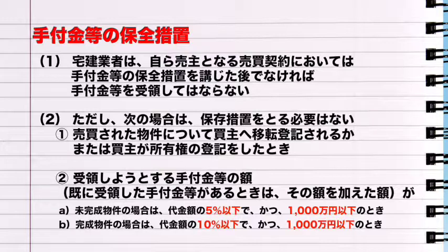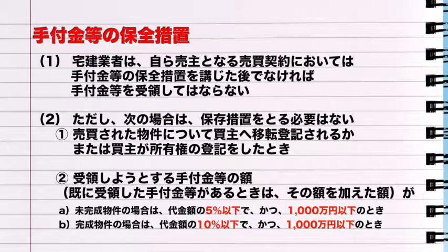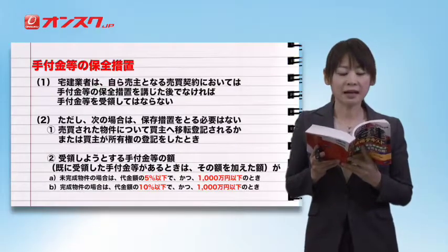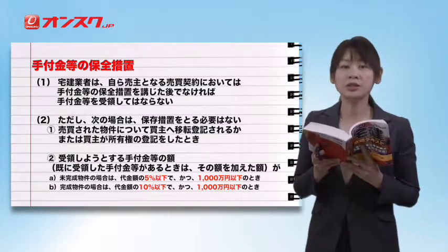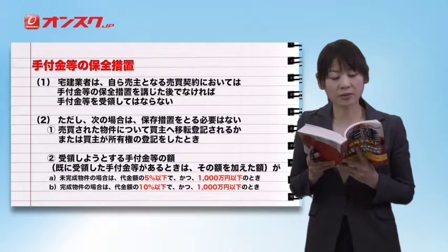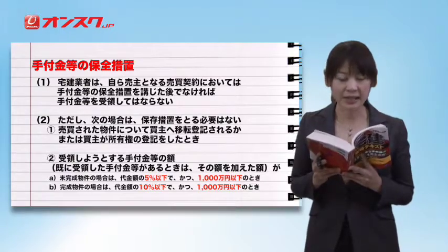手付金等の額の基準として、①未完成物件の場合は代金額の5%以下でかつ1000万円以下のとき、②完成物件の場合は代金額の10%以下でかつ1000万円以下のとき、保全措置が不要となります。1つ目の規定は、保全措置を講じた後でなければ手付金の受領自体をしてはならないという規定になります。